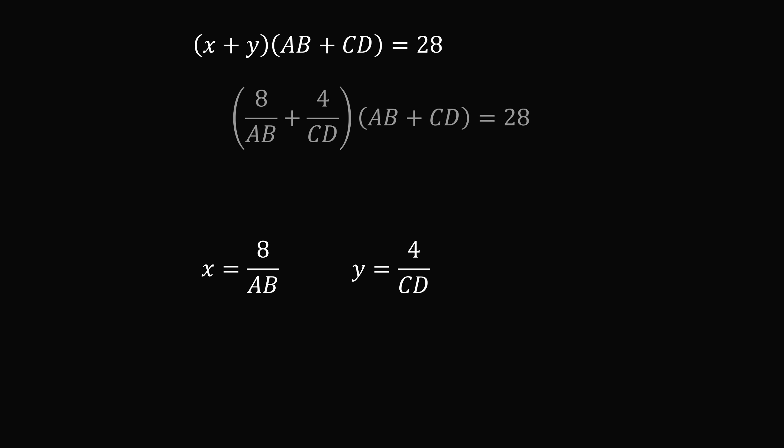So we will have the quantity 8 over AB plus 4 over CD multiplied by the quantity AB plus CD is equal to 28.